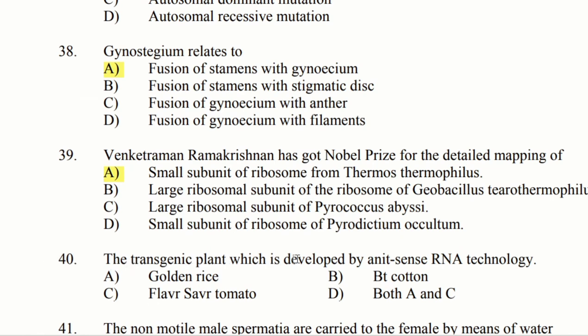Question 40: The transgenic plant which is developed by antisense RNA technology. Option A: golden rice. Option B: BT cotton. Option C: Flavr Savr tomato. Option D: both A and C. The answer is option C, Flavr Savr tomato. So in this session we discussed these different questions. Thank you.